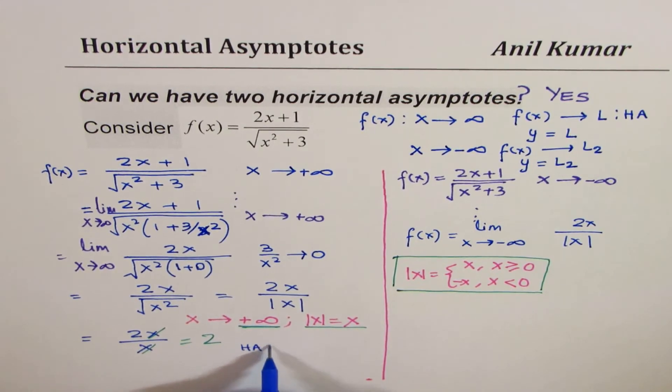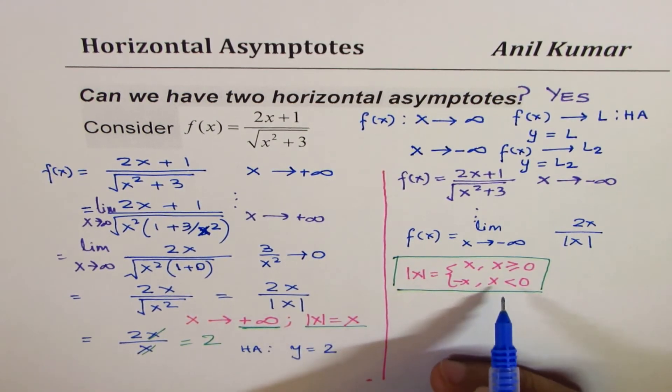So in this particular case, the equation of horizontal asymptote is y equals 2.